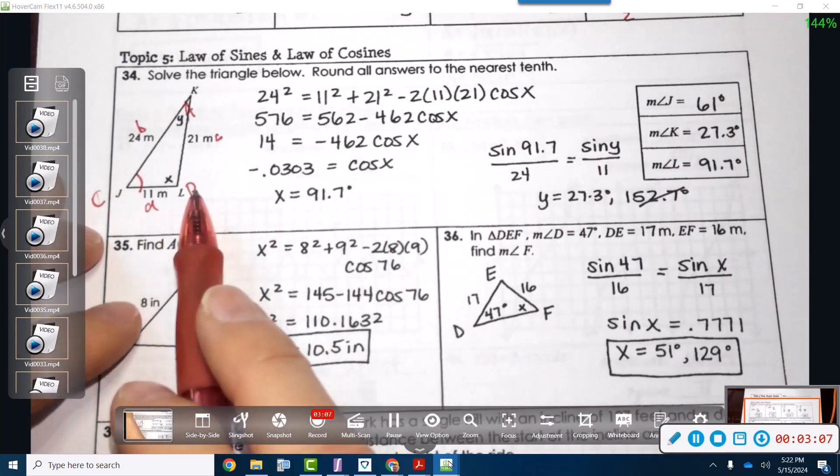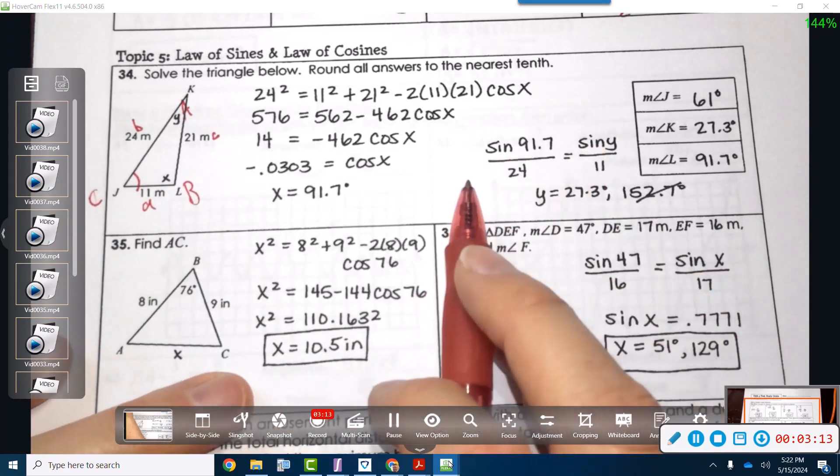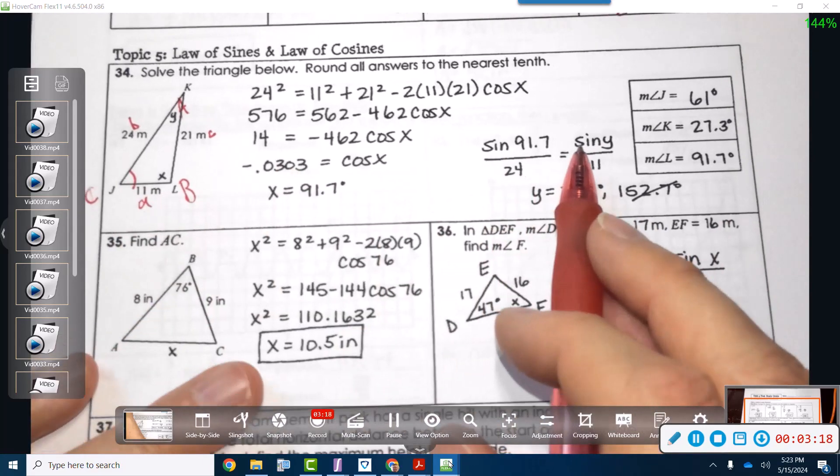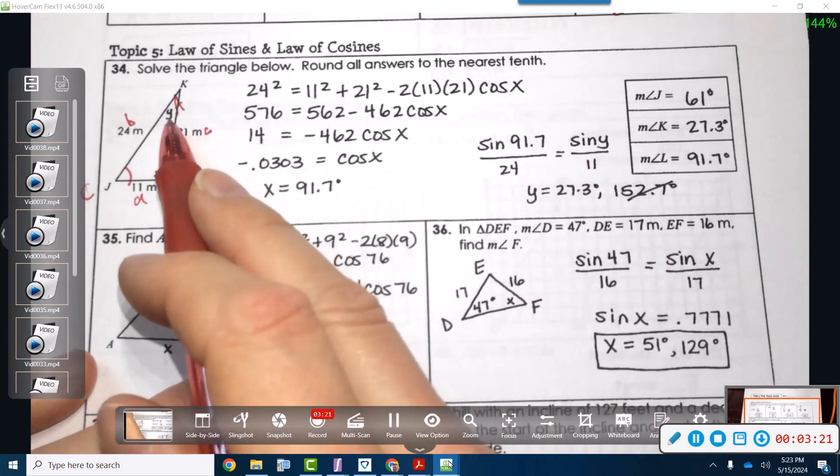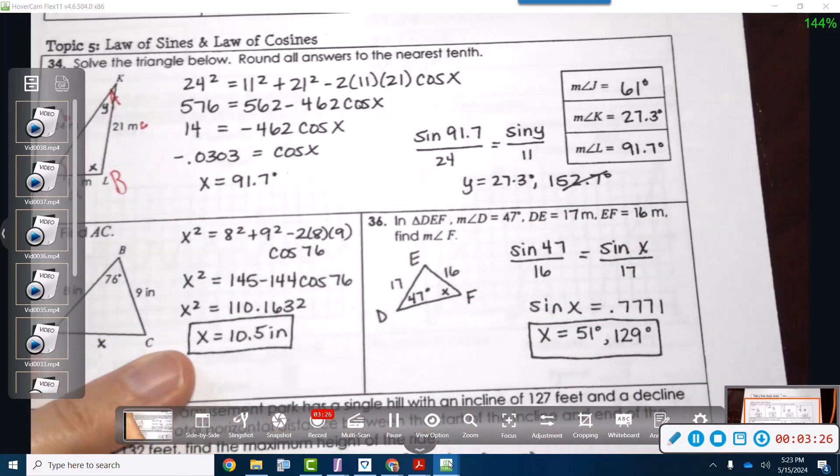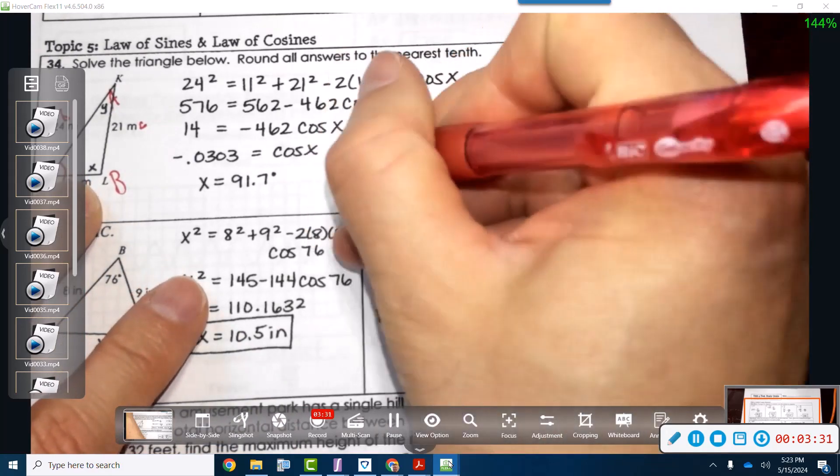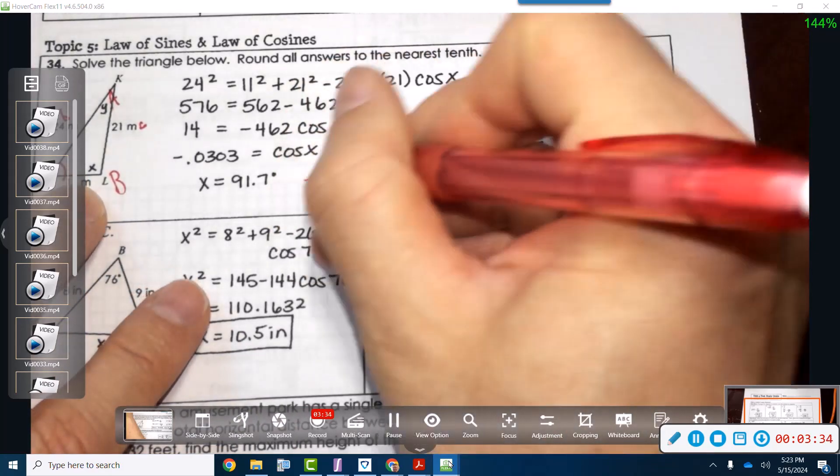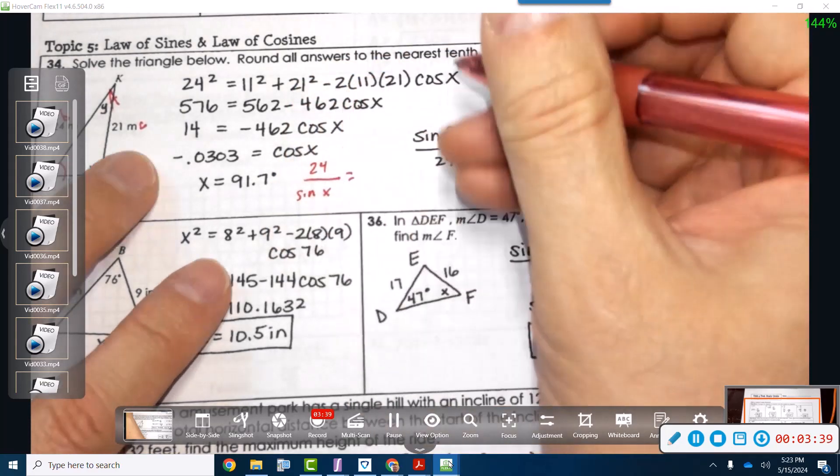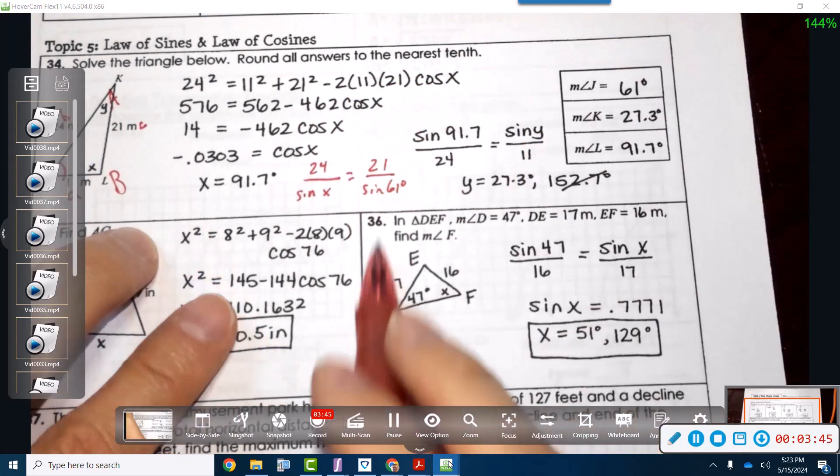What about L? So L would then be, oh man, we got to do it again. No, we'd have to figure out what L is because we know J. So let's try this now we've got, let's solve for L. So the 24 over the sine of L, which we don't know, equals 21 over the sine of 61. Is that what we got? Well, we don't know because we didn't solve for that.